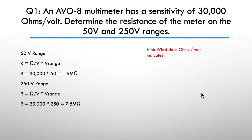Here's our two answers. For the 50 volt range first: R is the ohms per volt multiplied by the voltage range. So in this particular case we've got 30,000 ohms times 50, gives us 1.5 megaohms.